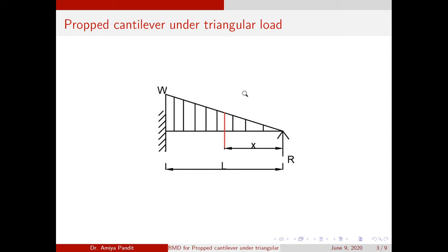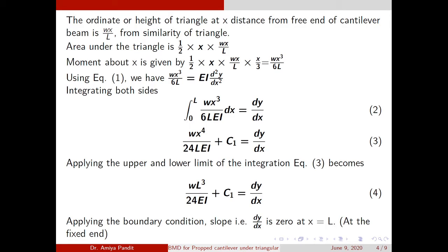The ordinate of that line can be calculated using similarity of triangles. I can say that w₁ divided by y₁ is equal to L by x, so y₁ = wx/L. This is calculated using similarity of triangles. Now the area under the triangle is the force, which is half into base into height. In the region x, the base is x and height is wx/L. To calculate the moment, force into perpendicular distance — x/3 is the centroid distance — so the moment about x is wx³/6L.